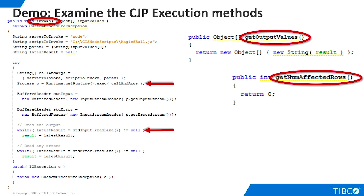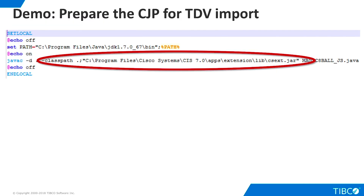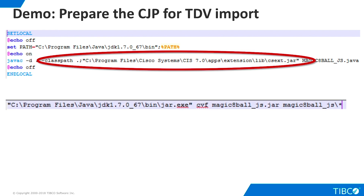TDV calls the Close method when the procedure is no longer needed. The Custom Procedure interface also includes a set of methods for data sources that implement transactional behavior. These methods are beyond the scope of this introductory demo. Our code is complete, and now we can prepare it for import into TDV. To do this, we compile the code using the same Java version that TDV is using. Note that we include the location of the CSEXT.jar file in the class path. After compilation, we jar the class file. The JAR is what we will import into TDV.